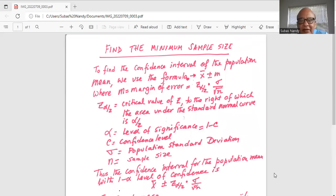Now what is z alpha by 2? It is the critical value of z to the right of which the area under the standard normal curve is alpha by 2. What is alpha? Alpha is the level of significance, which is 1 minus c. c is the confidence level. Now sigma is the population standard deviation and n is the sample size.